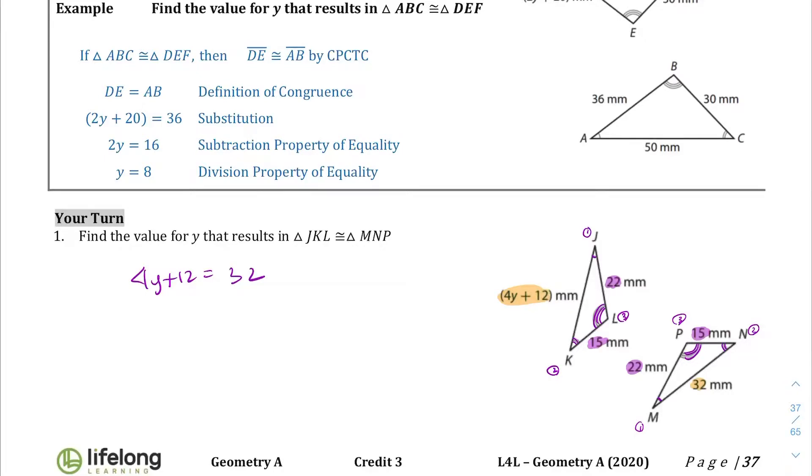Let's go and solve this. Subtract 12 from both sides. This goes away, 4y equals 20. Divide both sides by 4, we get y equals 5. So the value of y that makes it equal is 5.